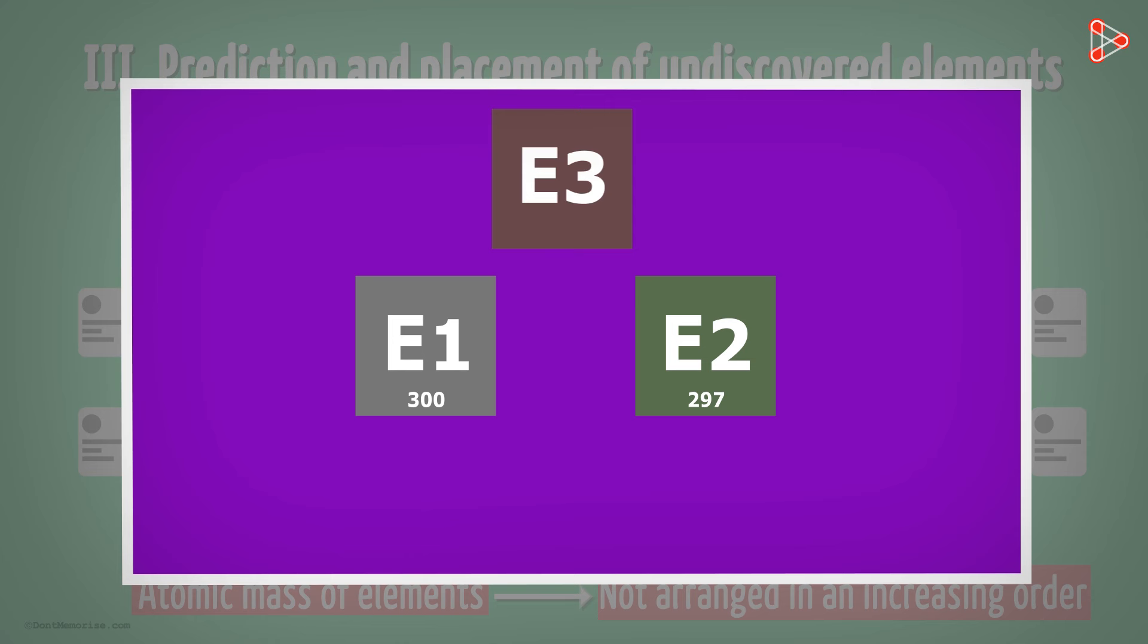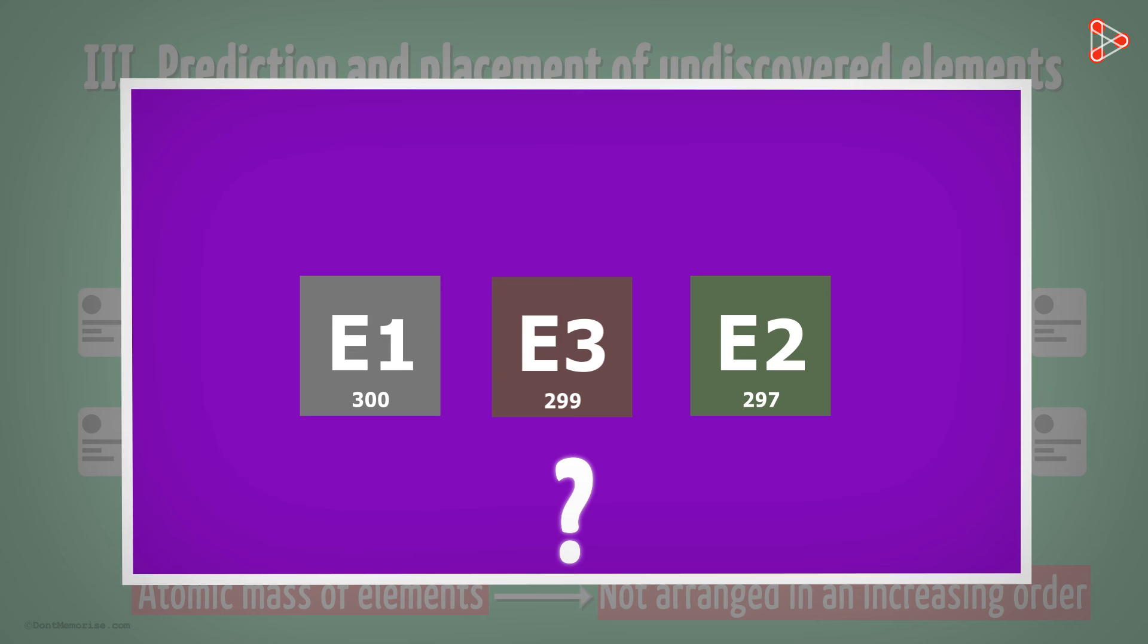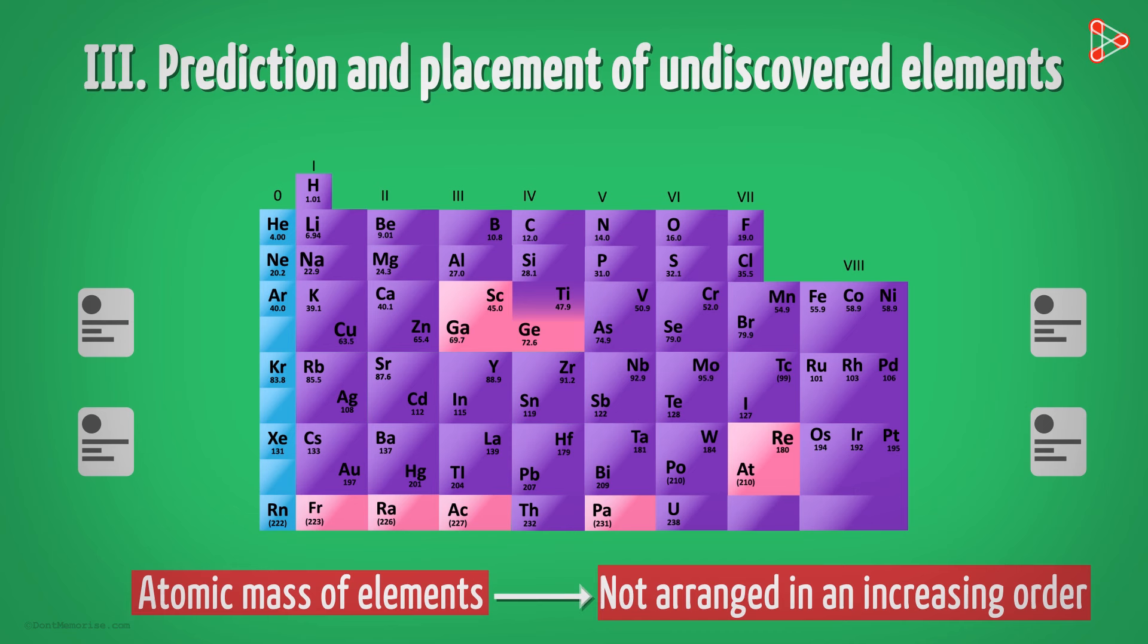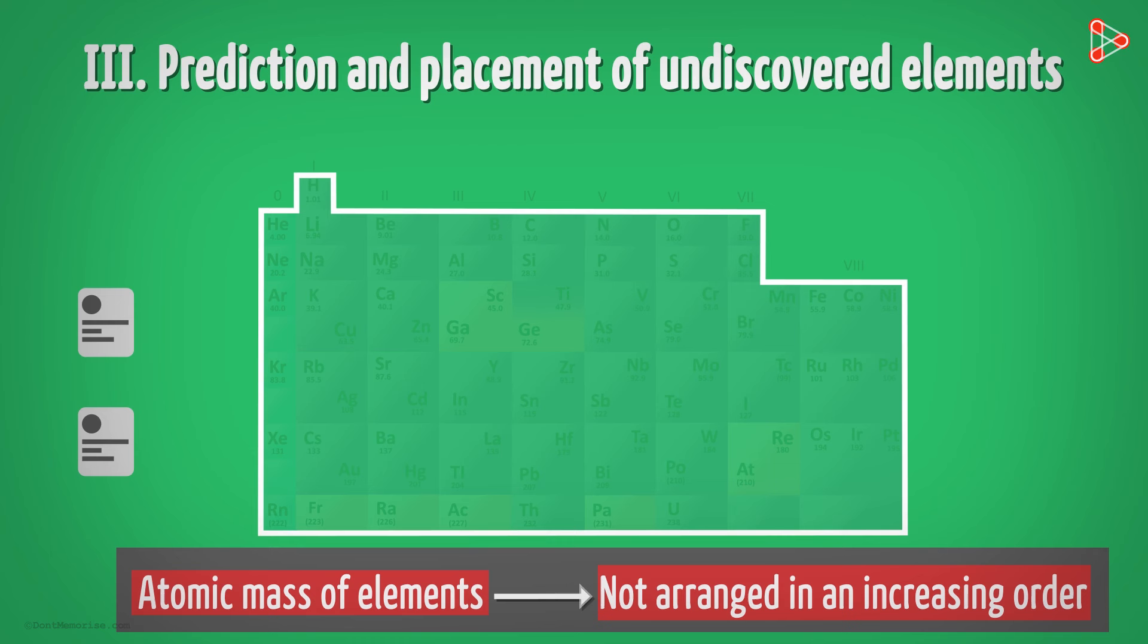Now in this case, if a newly discovered element, say element 3 has atomic mass of 299, where will we place it? Between the two elements or after the second element with atomic mass 297? And this is what was happening with Mendeleev's periodic table because the atomic masses of elements were not placed in a constantly increasing manner. Some elements did have atomic masses less than the previously placed element.